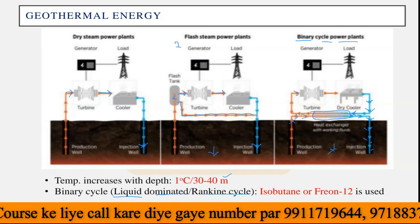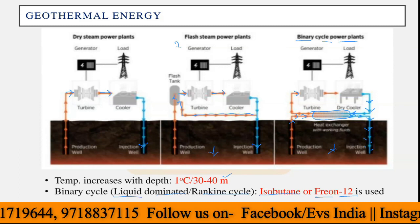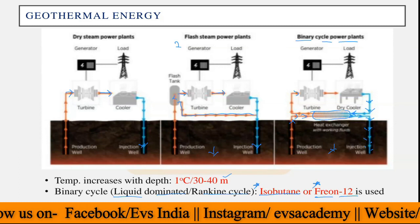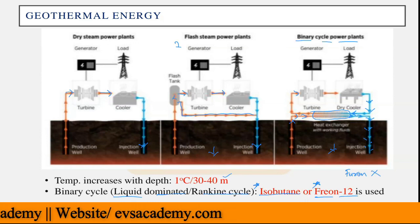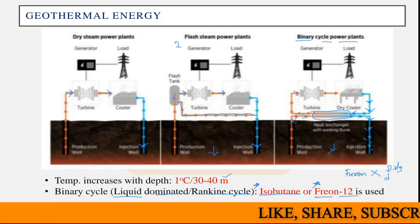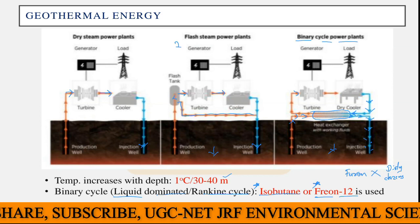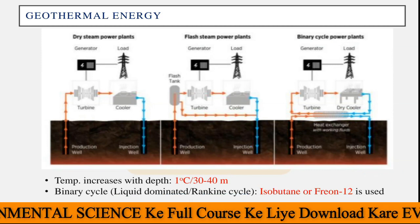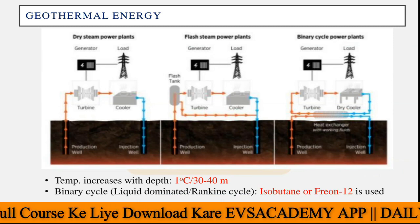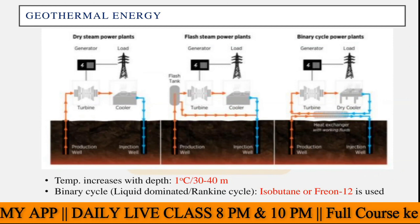In the liquid-dominated or Rankine cycle, the liquids you can use are isobutane or Freon 12. So isobutane and Freon 12 are the names you have to remember. This is not Furon — don't confuse it with Furon. Furon is a different material and is part of the dirty dozens, identified by the international forum which has banned 12 materials. Furon is one of those 12 banned materials. This is Freon 12, used in the Rankine cycle or liquid-dominated binary cycle geothermal power plants.